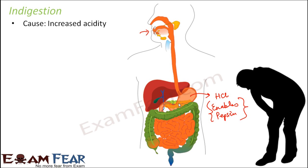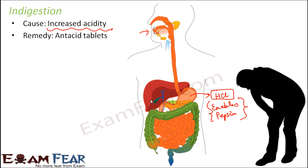But when indigestion happens, or when you get that burning sensation in your stomach, that happens due to increased acidity — that means increased concentration of hydrochloric acid in the stomach. Now when you have too much acid in your stomach, how do you reduce the effect of that acid? By putting some base into it, because the base will neutralize the effect of the acid. That is what we learned in the neutralization reaction. So in this case, what do we normally do? We take some tablets — the antacid tablets like DIGENE.